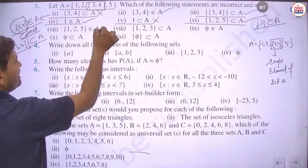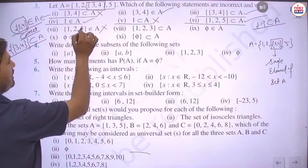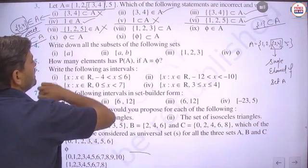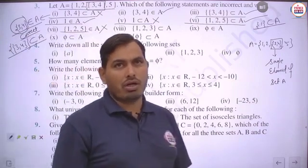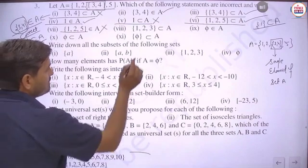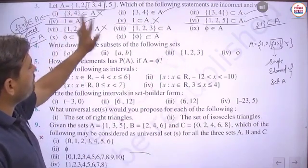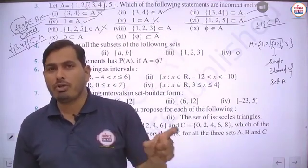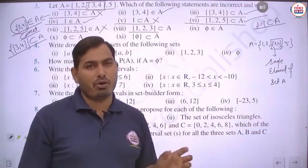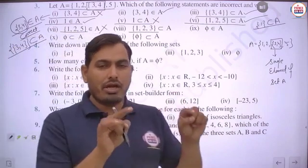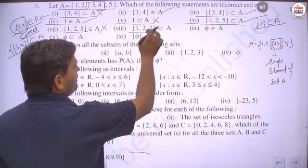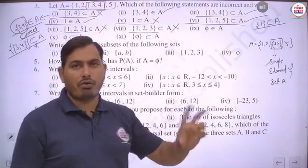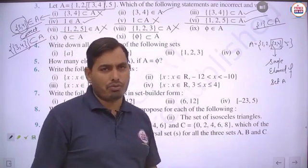Seventh part: {1, 2, 5} ∈ A — this is incorrect because {1,2,5} is written as a set, so we should use the subset symbol, not belongs to. Eighth part: {1, 2, 3} — note that 3 cannot be separated from {3,4} since they form a single element. So this statement is incorrect because 3 alone is not an element of A.